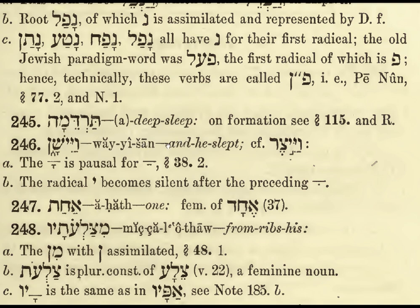Tardema — deep sleep. Vayyishan — and he slept. Compare with Vayyitzer. It's pausal, so Ah here is a heavy syllable; the radical Yud becomes silent after the preceding Chirik. Ahat — one — this is the feminine form. Mitztzalngortav — from his ribs.